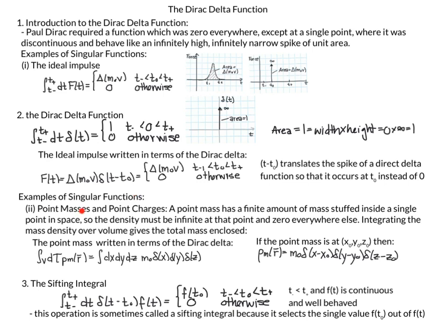We look at other singular functions — point mass and point charges — and then we introduce the sifting integral, which is actually from our next section but useful to discuss now. The integral of the Dirac Delta centered at t-naught times a function f of t will sift out the evaluation of the function at t-naught. We'll do some examples of this.